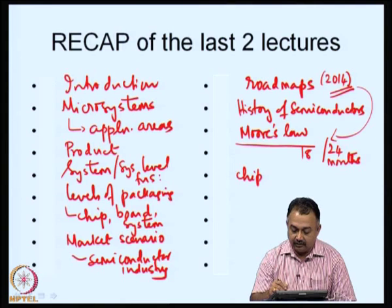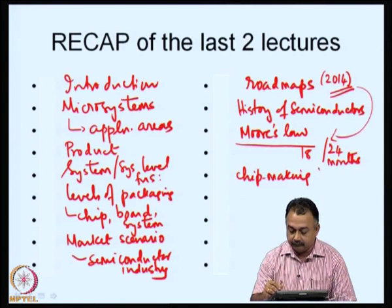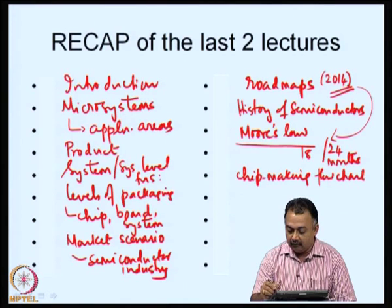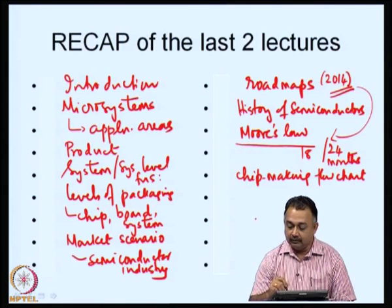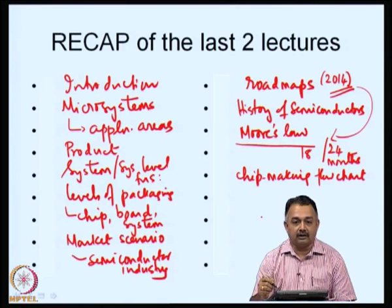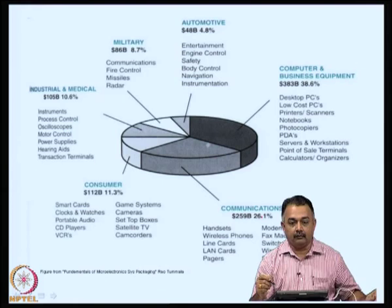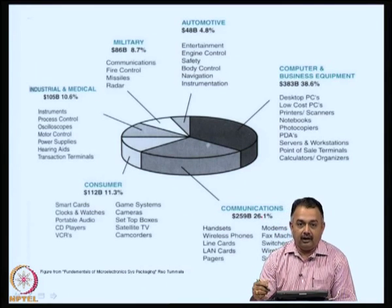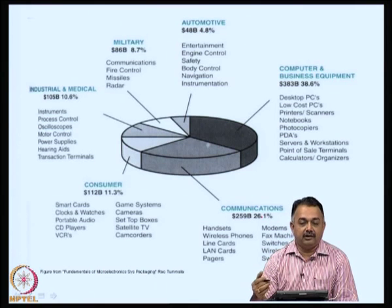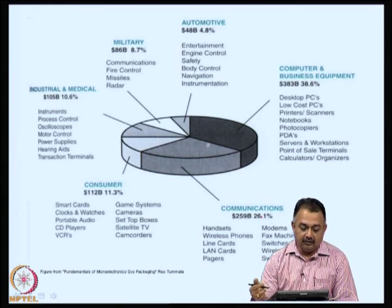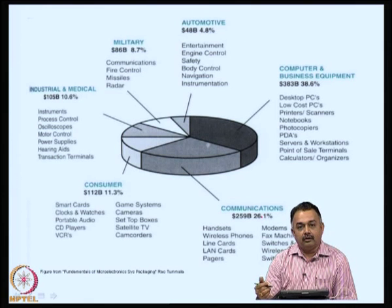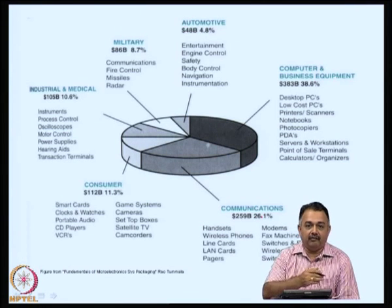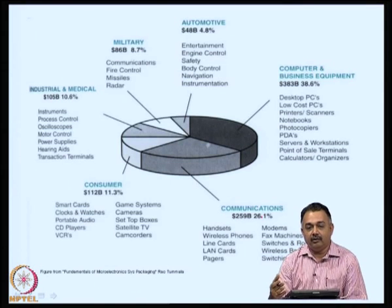We briefly talked about chip making process and chip making flow chart. I mentioned that we are going to look at a detailed process flow of how a chip is made. Today, I will take you through the various application areas that I briefly mentioned in the first class. We will discuss representative products in each of these areas and slowly get to a point where we can define what packaging is, with the background we have built over the last two hours.